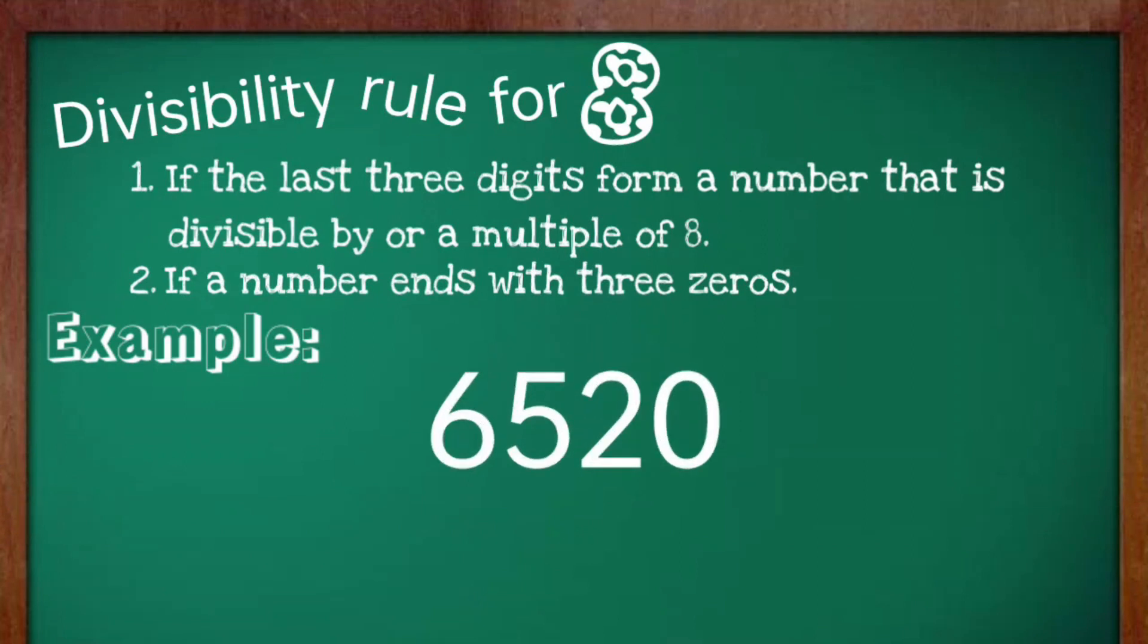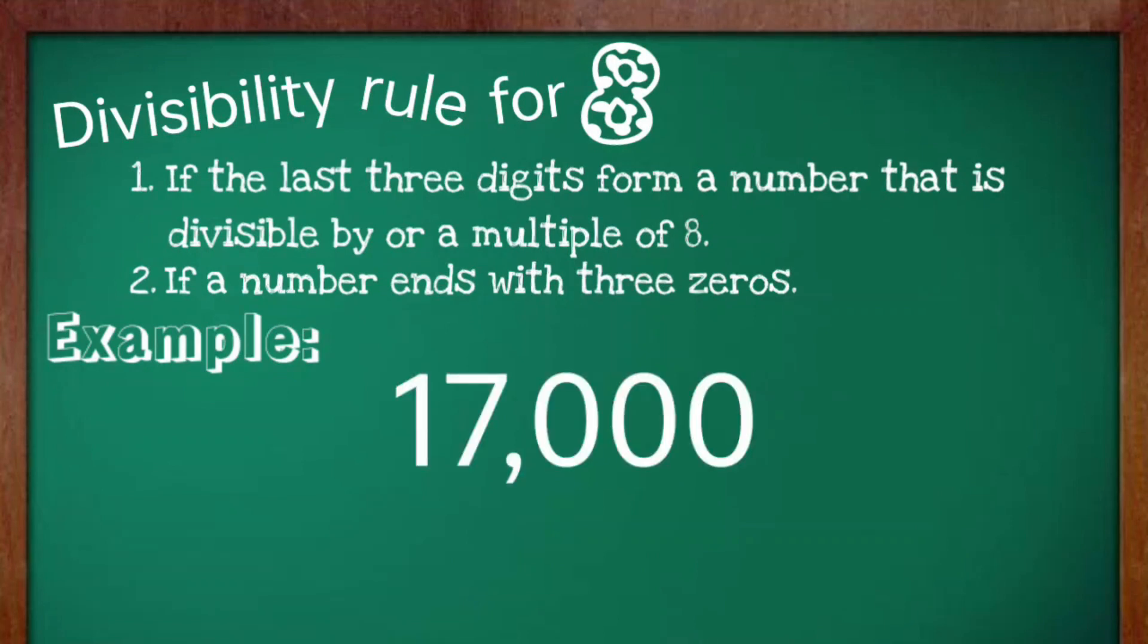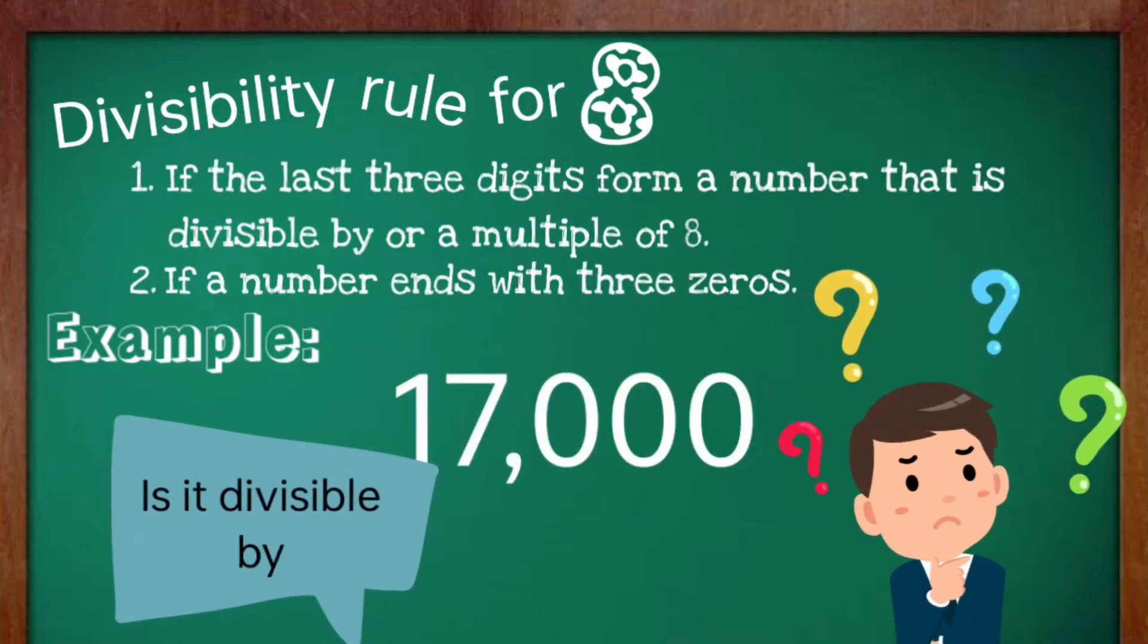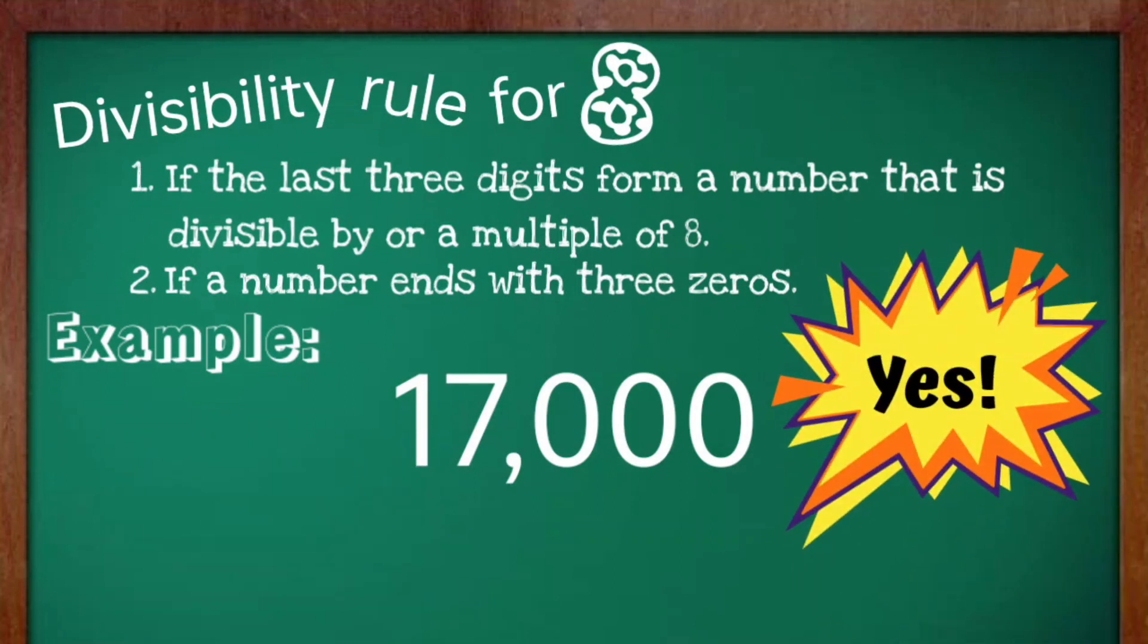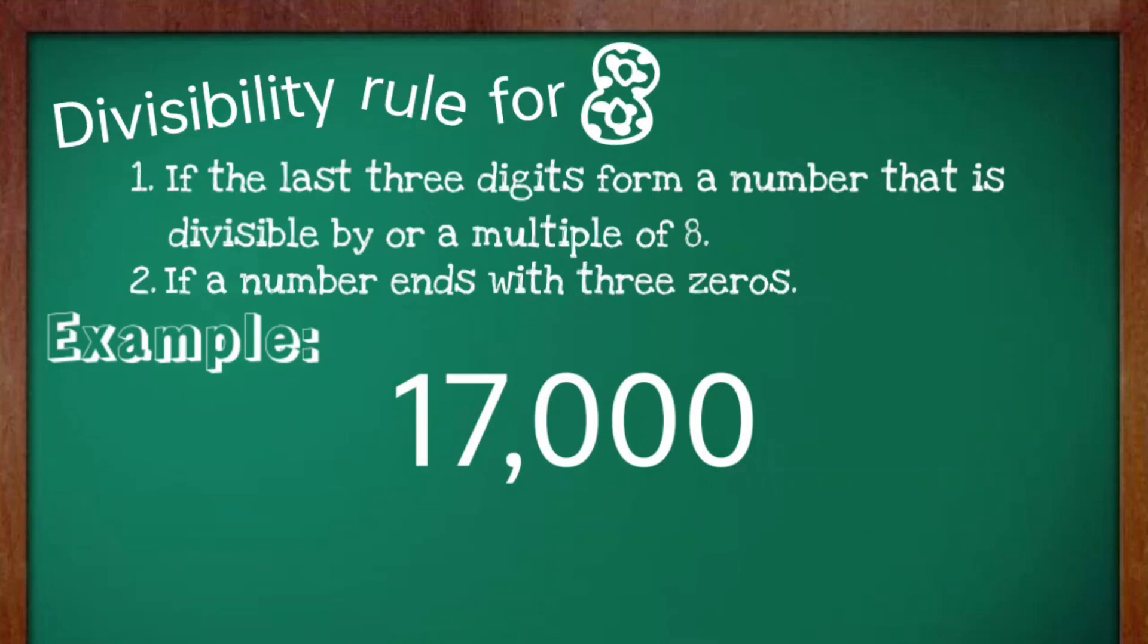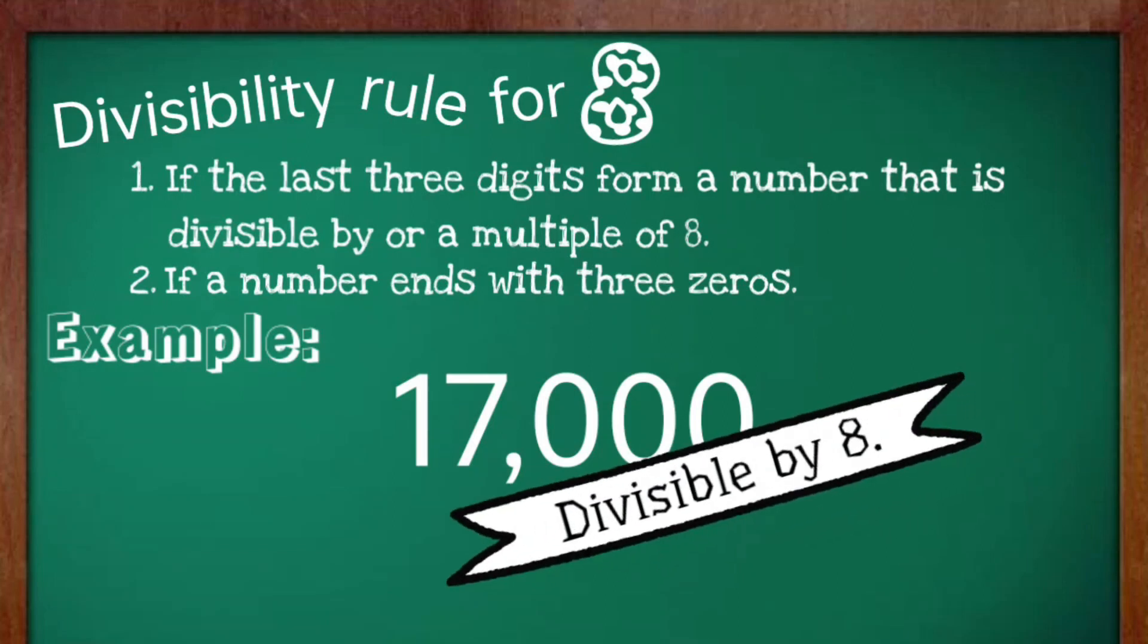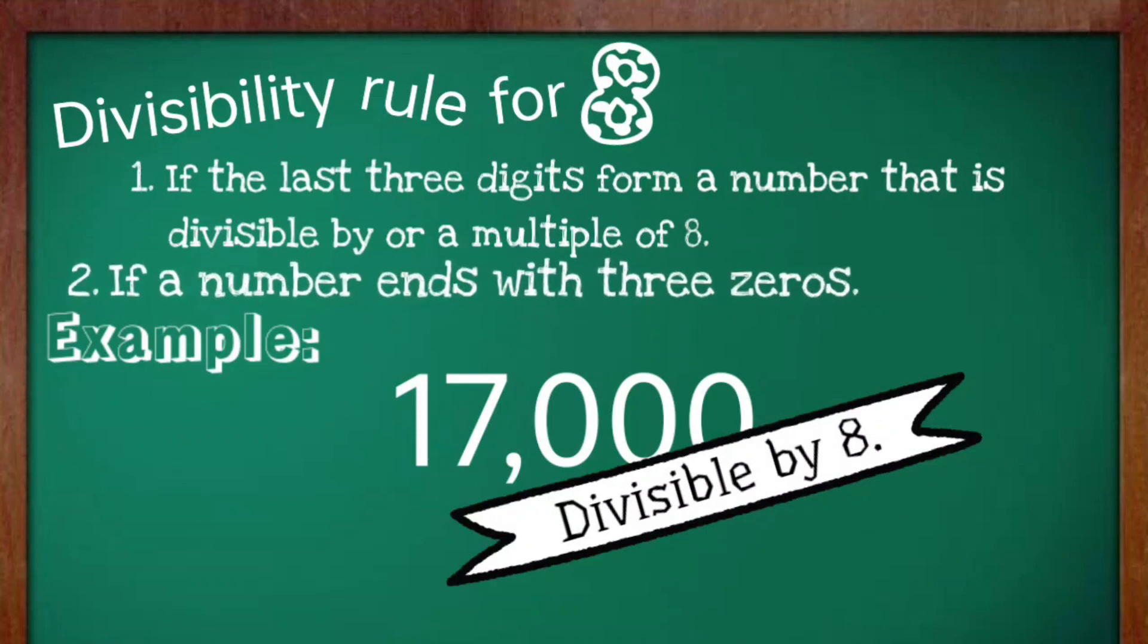Making 6,520 divisible by 8. How about 17,000? Is it divisible by 8? Yes, it is. Since the number ends with three zeros, therefore, it is divisible by 8, following rule number 2.